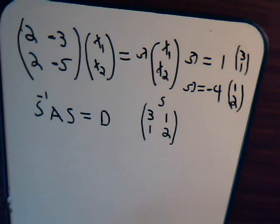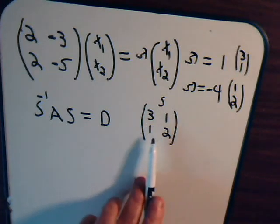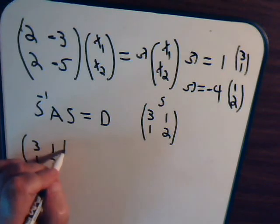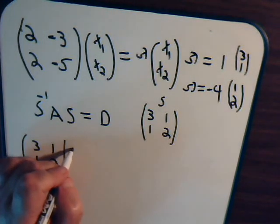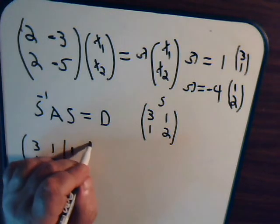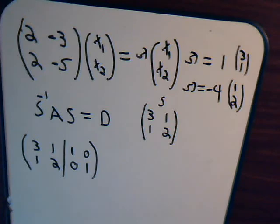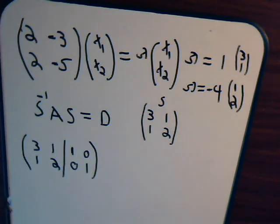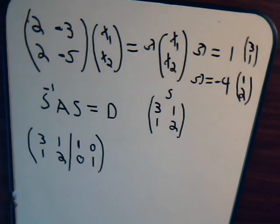Now we have to find the inverse of S. We set up the matrix [3, 1; 1, 2] augmented with the identity matrix, as we've done in previous videos. We reduce the left side to the identity matrix, performing the same row operations on the right side, which will give us the inverse. This is not new information from the previous videos.